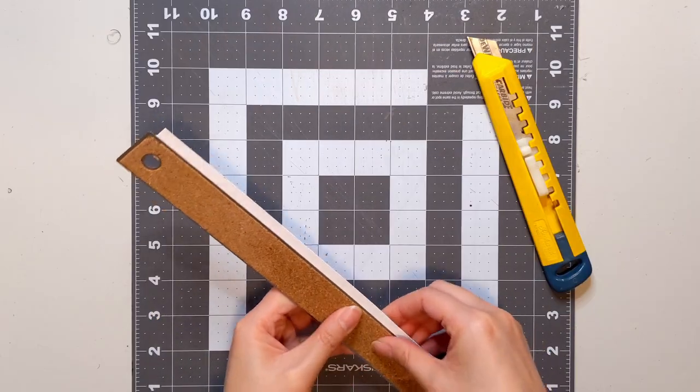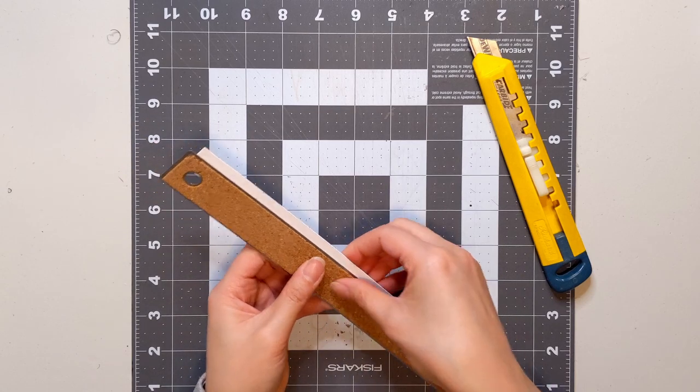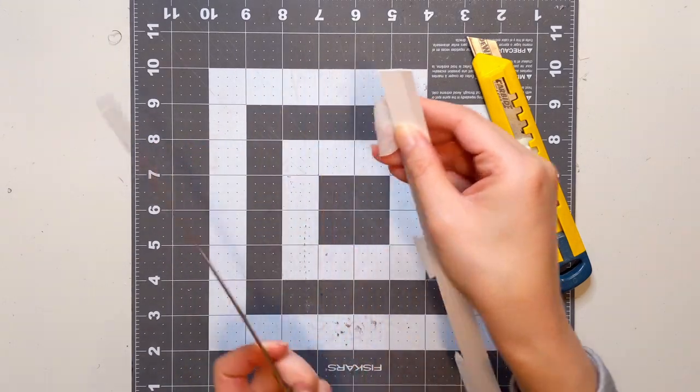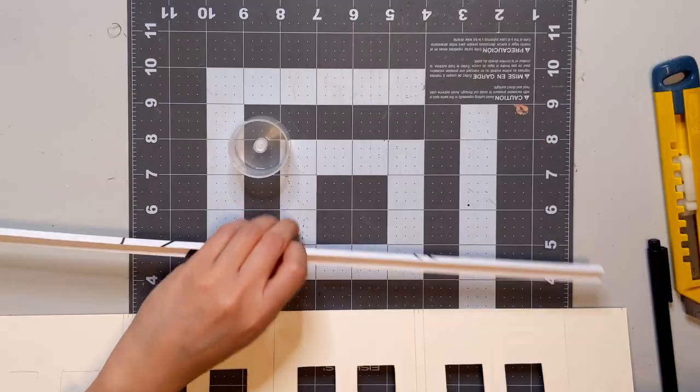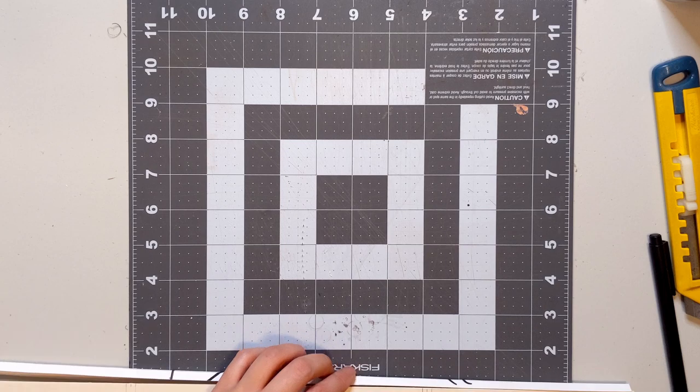We also need a baseboard, so I'm just using a strip that I cut from poster board and creasing it against my ruler for a nice distinct fold. Now we get to start gluing more things into place. Starting with the baseboard. Oh my god, don't look at the shots. Trainwreck.